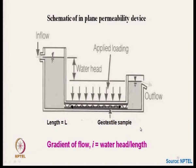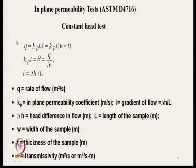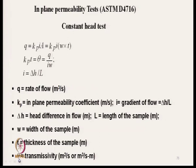We can measure the permeability using the formula where q is the rate of flow in cubic meters per second, kp is the in-plane permeability coefficient in meters per second, i is the gradient of flow, delta h is the head difference, l is the length of the specimen, w is the width, and t is the thickness. The cross-sectional area through which water flows is width multiplied by thickness; theta is the transmissivity.